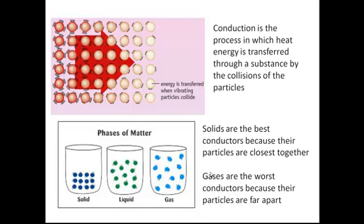Gases, on the other hand, are the worst conductors because their particles are very far apart. Even if a small number of particles do start moving faster, because they're so far away from all the other particles, they are unlikely to bash into other particles to pass on the energy.